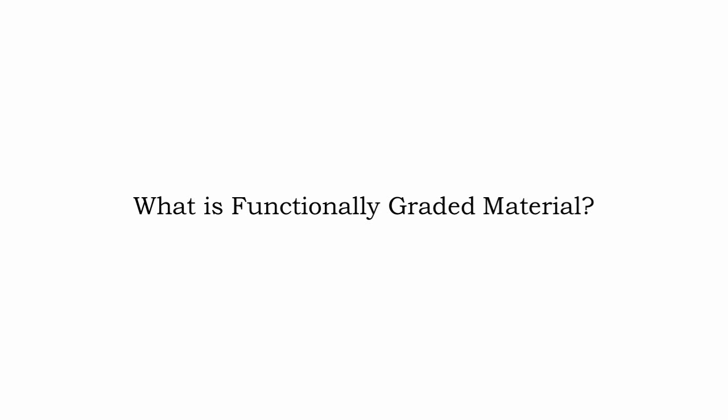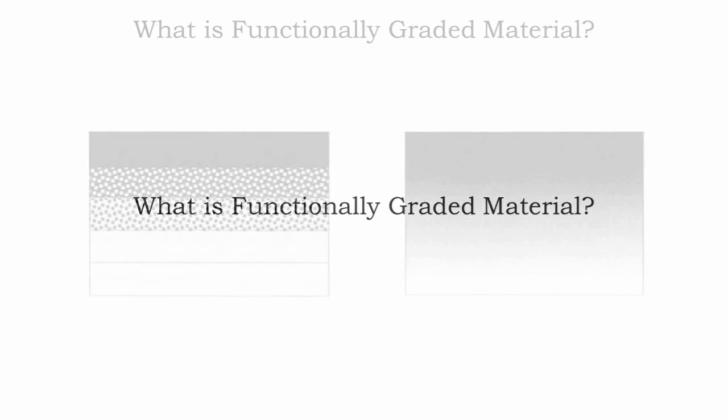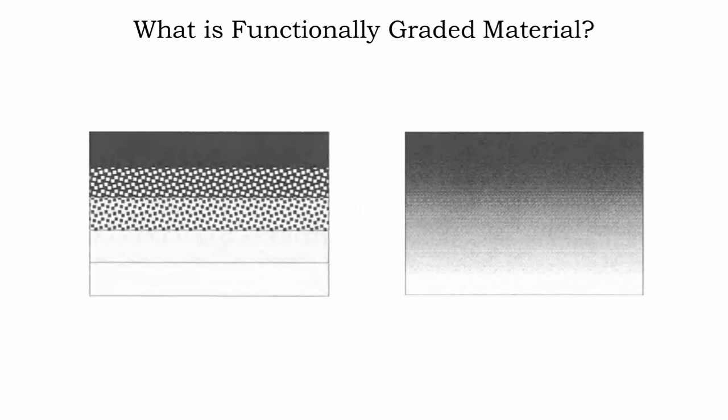These materials are completely different from the conventional composite materials, which are either a homogeneous mixture that involves a compromise between the properties of the components, or two or more different materials which are joined together, as in the case of laminated composite material, which is given in the figure on the left.